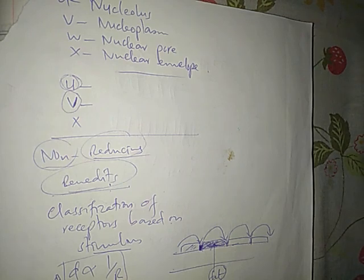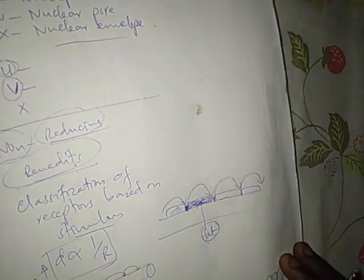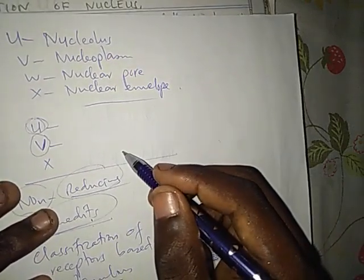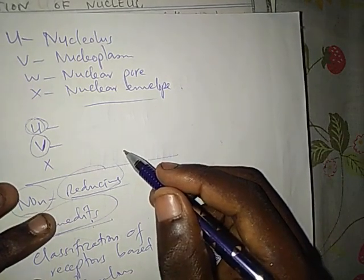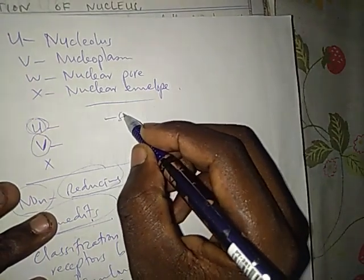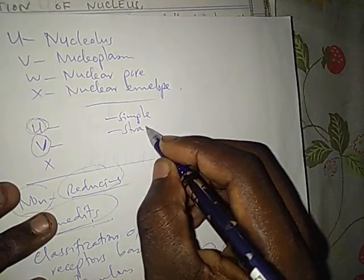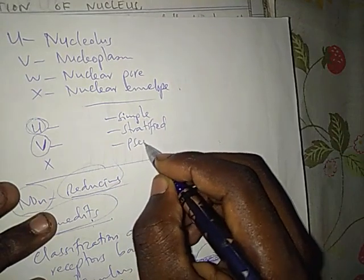This is columnar epithelium, or simple columnar epithelium. For the sake of this question, I want to explain a few words which will help you in determining these tissues. In epithelial tissues we have: simple, then stratified, then pseudo-stratified.